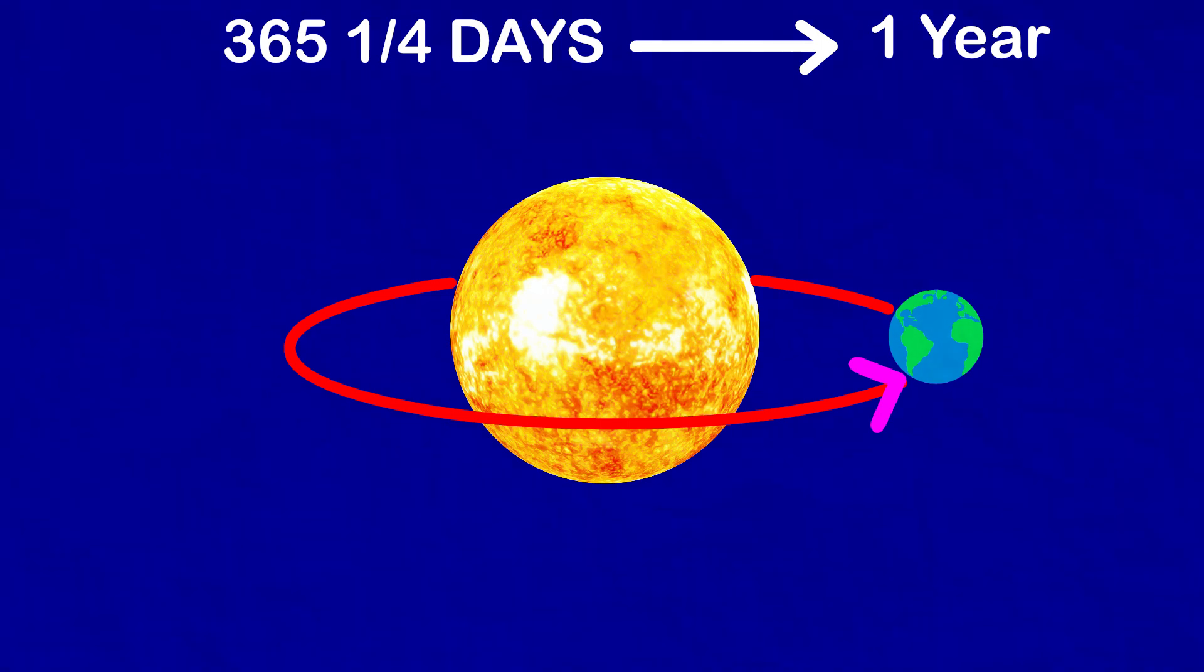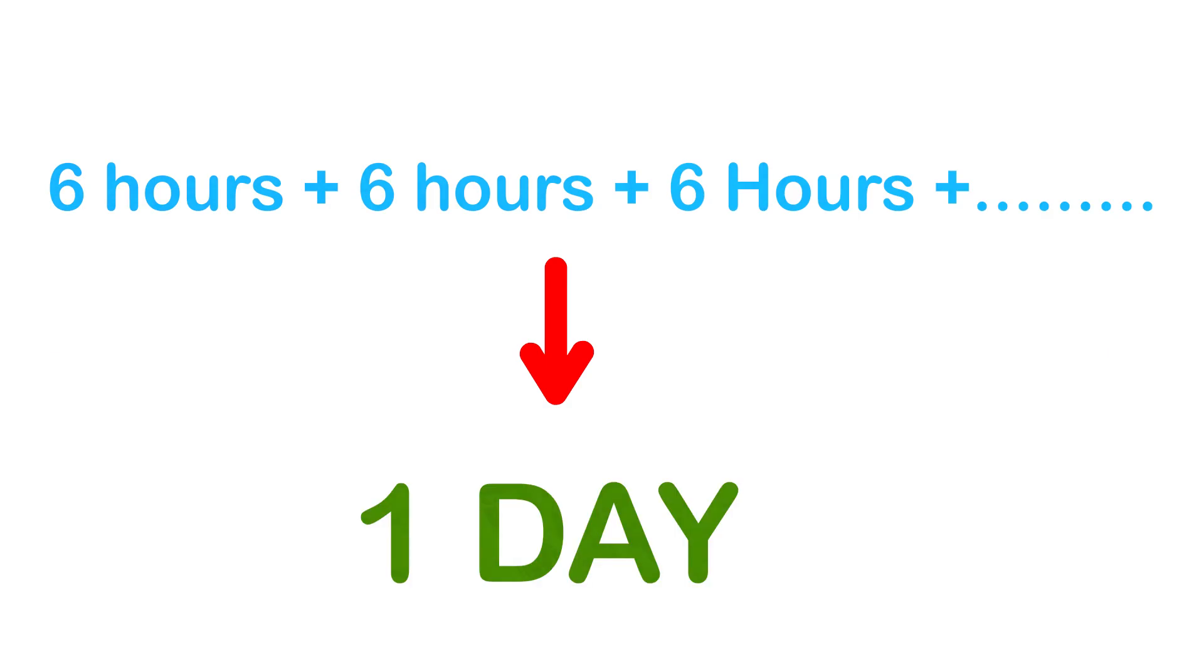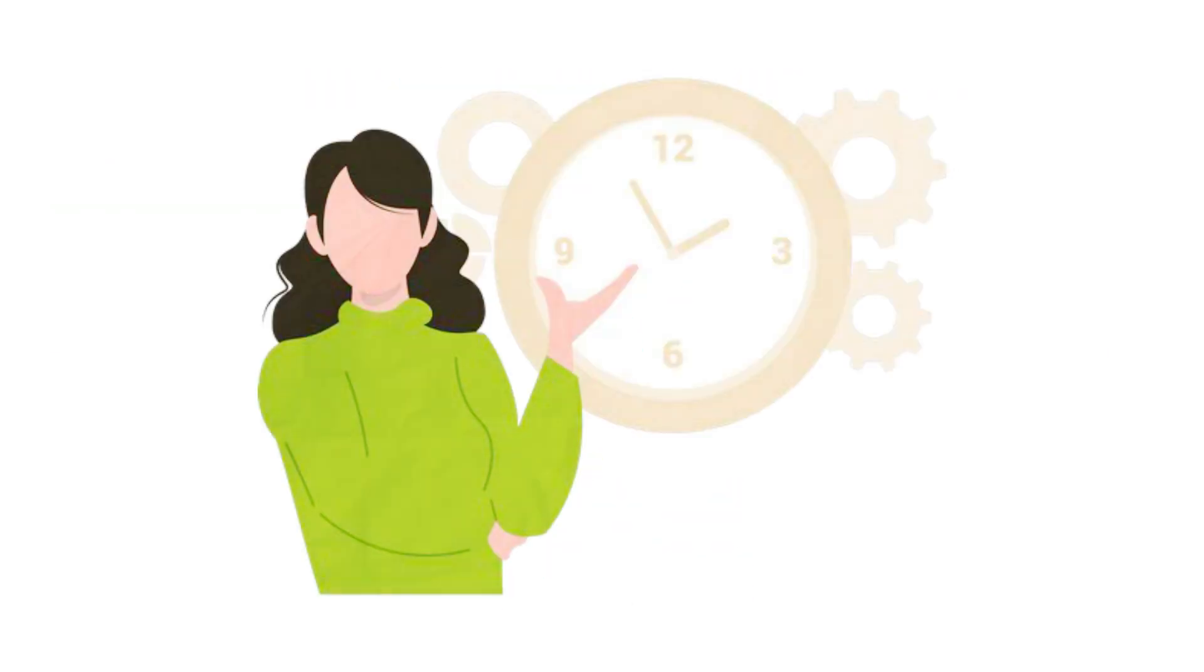We consider a year as consisting of 365 days only and ignore six hours for the sake of convenience. Six hours saved every year are added to make one day, which is 24 hours, over a span of four years.